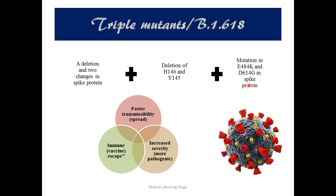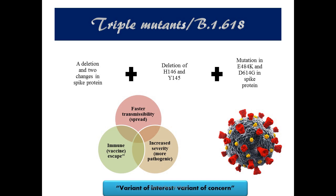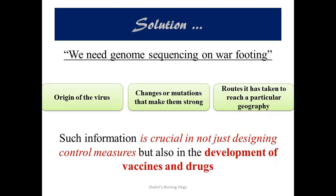There is a lot of mutation happening over the spike protein, which eventually increases the transmissibility — the spread of the virus. It can escape your immune system, escape the vaccine, and make it more pathogenic in nature. This has become a variant of concern for the globe.